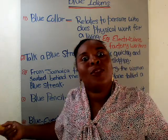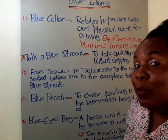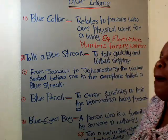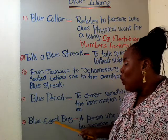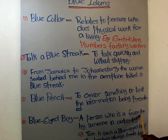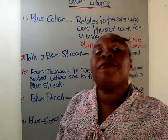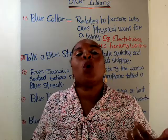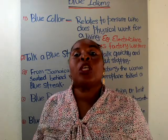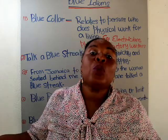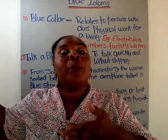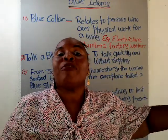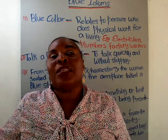Number four: 'blue-eyed boy.' What does it mean to be a blue-eyed boy? It means a person who is favored by someone in authority. A student could be favored by their teacher, or someone in the political scene — say the president favors the governor of a specific state.